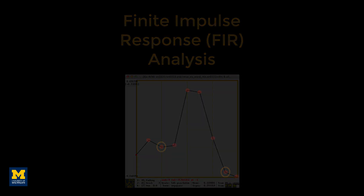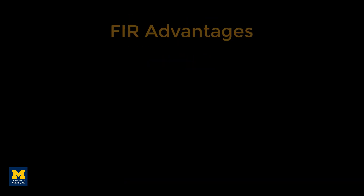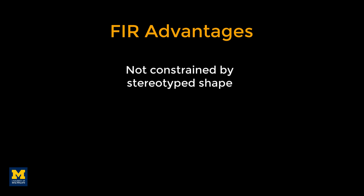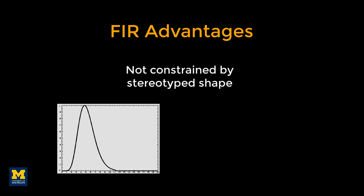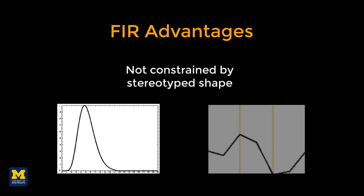The advantage of a finite impulse response analysis is that it is not biased toward a particular shape, as is the case with the hemodynamic response function. Instead, the shape is unconstrained, which means that the individual time points can be any value.